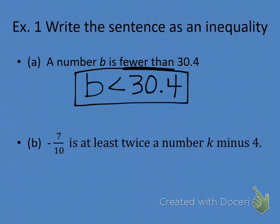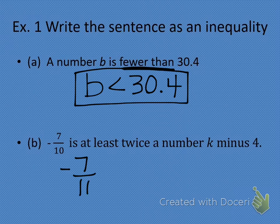I want you and your table to look at letter B and write your inequality for sentence B. Eyes back up here — Dalton, what did you guys get at your table? Negative 7 tenths less than K minus 4.